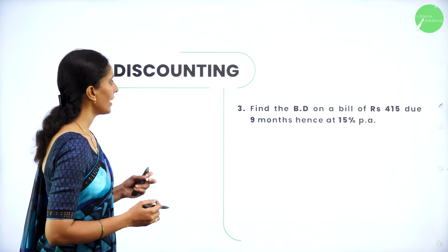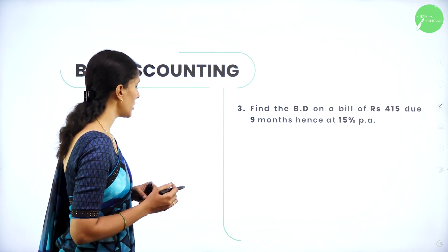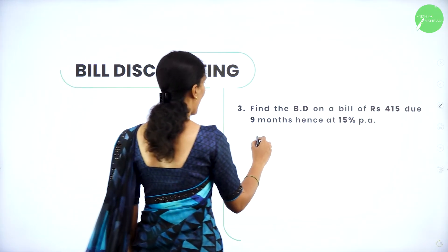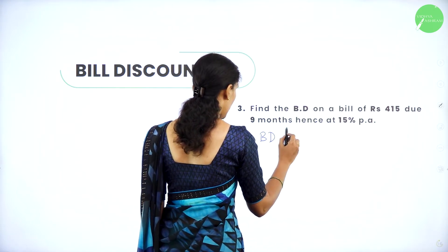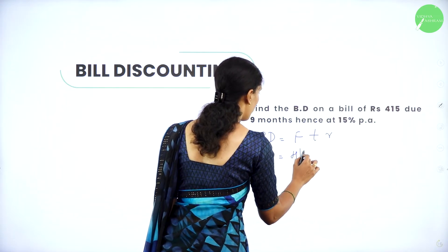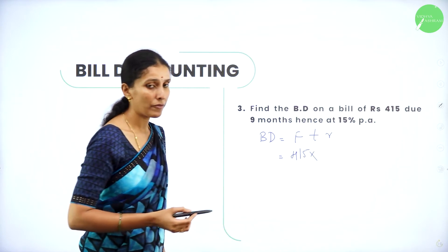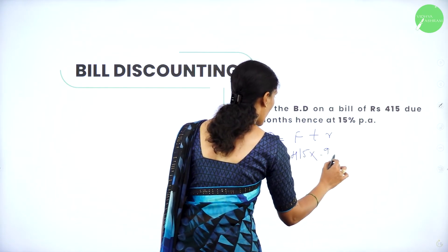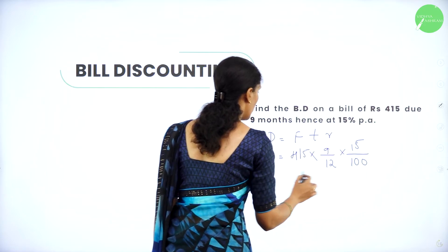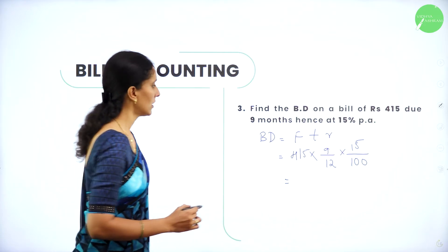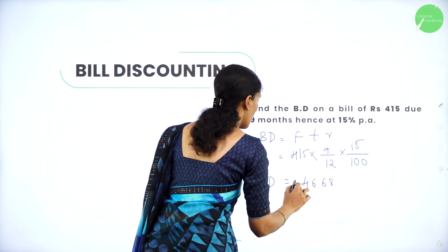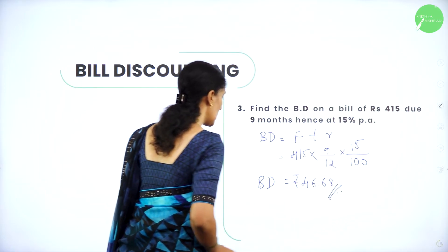Next question: find the banker's discount on a bill of Rs. 415 due 9 months hence at 15% per annum. Using BD = FTR: face value = 415, time = 9/12 years, rate = 15/100. After evaluating, the banker's discount is Rs. 46.68.